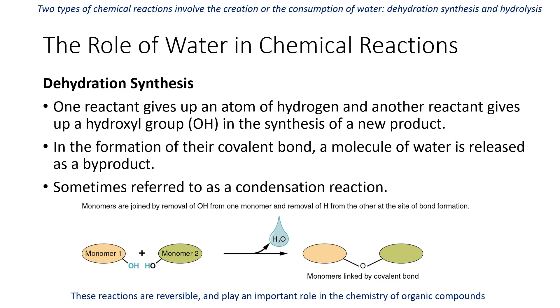In dehydration synthesis, one reactant gives up an atom of hydrogen and another reactant gives up a hydroxyl group when you're synthesizing a new product. In the formation of the covalent bond, this water molecule is released as a byproduct. So by giving up a hydroxyl group and a hydrogen, water is created and these monomers now have a covalent bond. This is also called a condensation reaction.